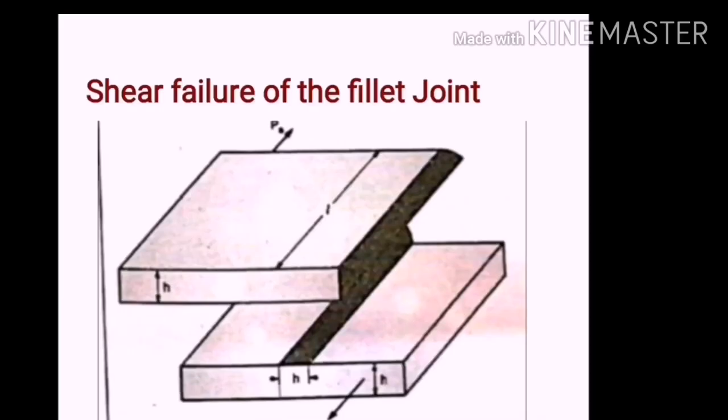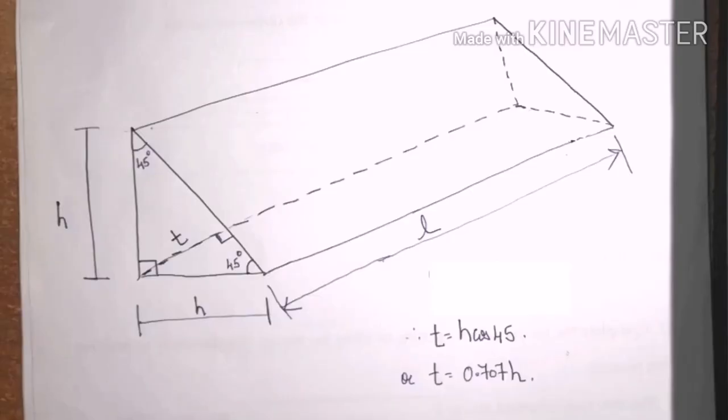Another type of failure of a fillet joint is the shear failure. In this case, the load applied is in the direction of the axis of the weld. And because of this, the weld will experience the shear failure. We have seen the shear and tensile failure of the welded joints.